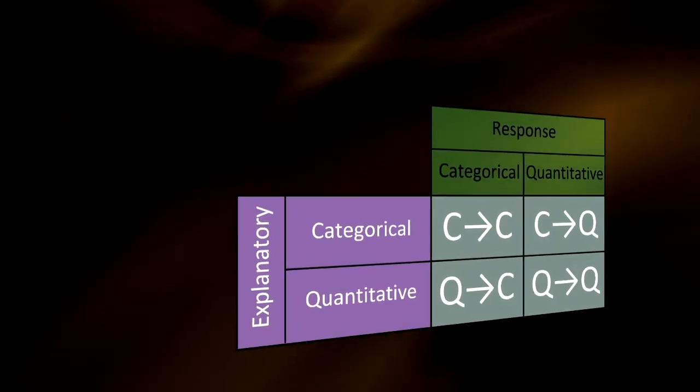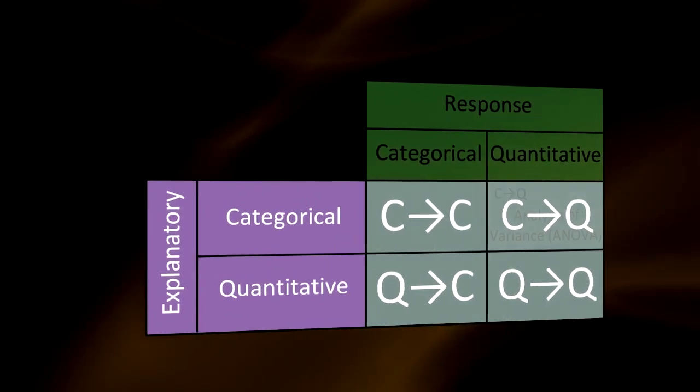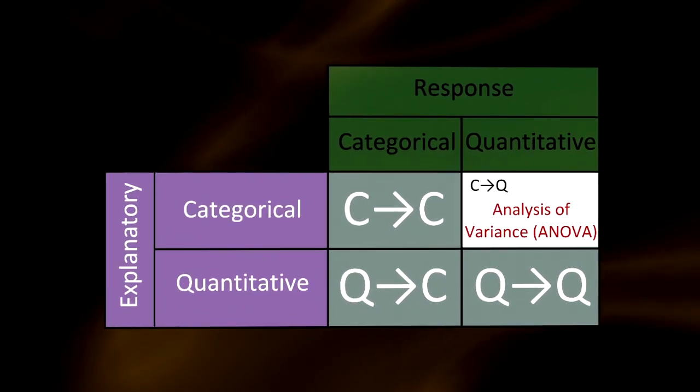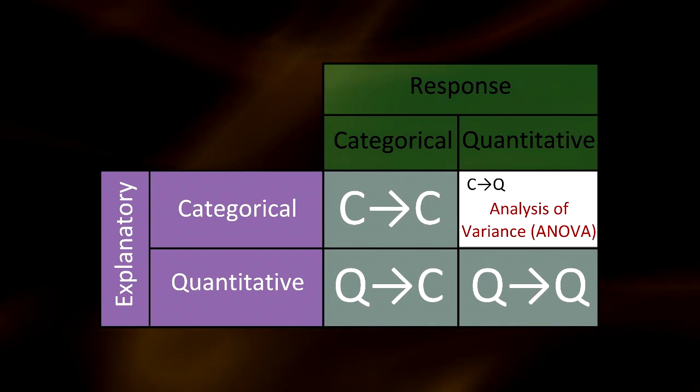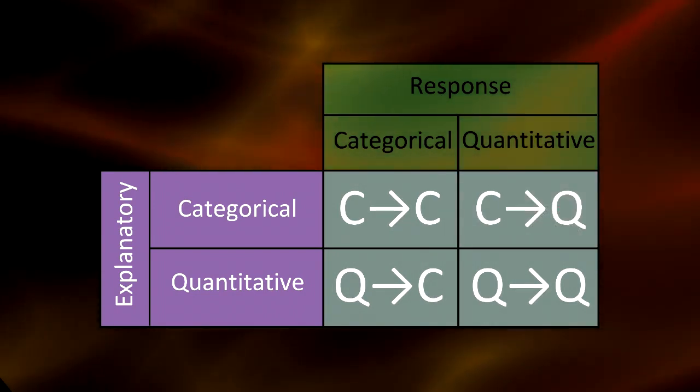Analysis of variance involved examining the relationship between a categorical explanatory variable and a quantitative response variable. Next, we're going to consider inferences about the relationships between two categorical variables.